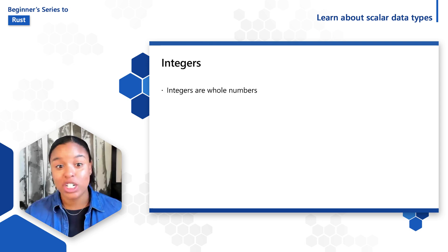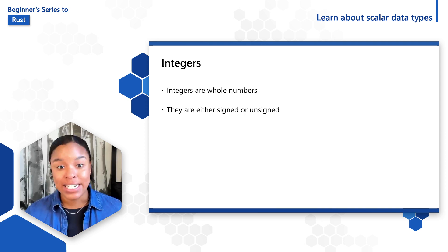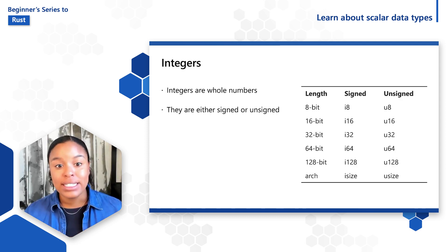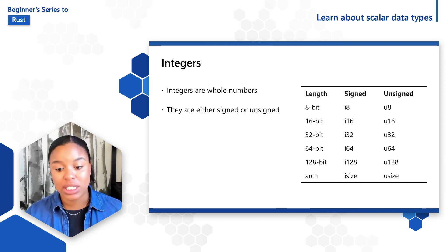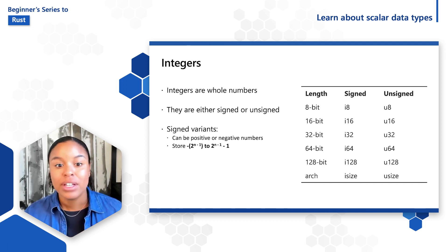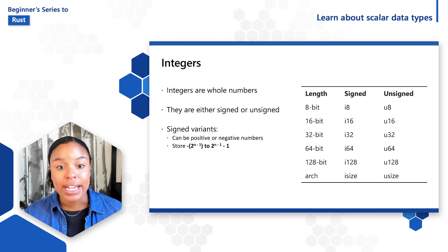First up, let's dig into integers. Integers are whole numbers and they can either be signed or unsigned. Signed indicates that a number has a plus or a minus sign, so it can either be positive or negative. Unsigned numbers have no sign and are always positive. This table shows the integer types that exist in Rust, with various lengths for each signed and unsigned variant. So an i8, a signed 8-bit integer, can go from a range of -128 to 127.